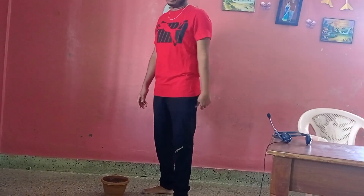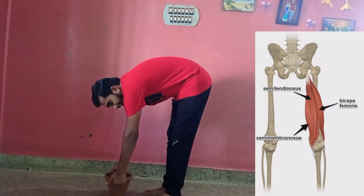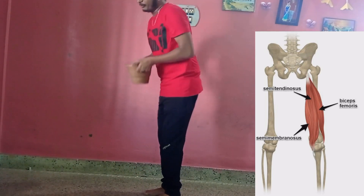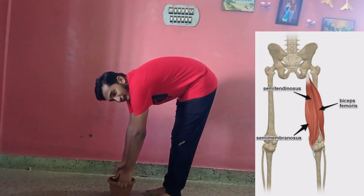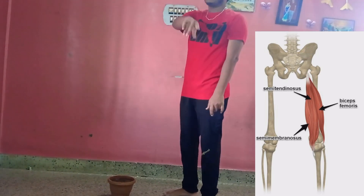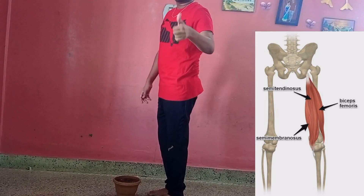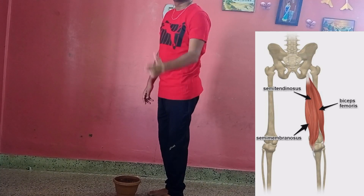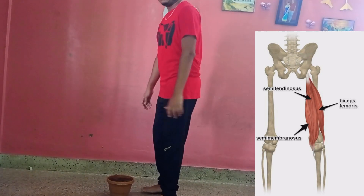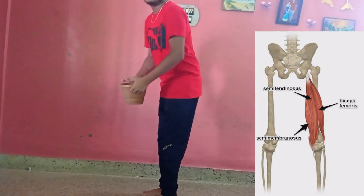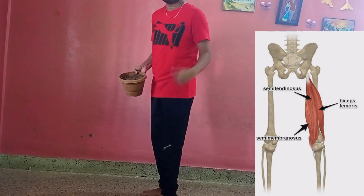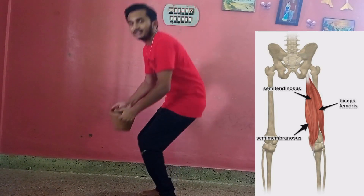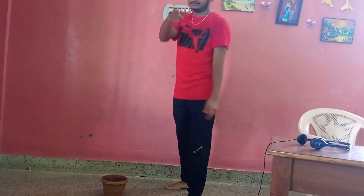Talking about hamstring muscles: in stoop lifting, at the beginning there is low activity, at the middle moderate activity, and at the placement low activity again — low at the beginning, moderate in the middle, and low at the end. In squat lifting, you can feel that only the quadriceps are active, so the hamstrings are at low activity throughout the squat lifting.